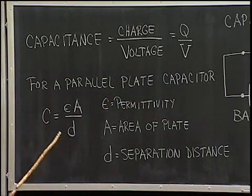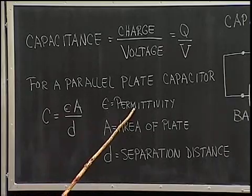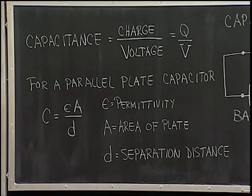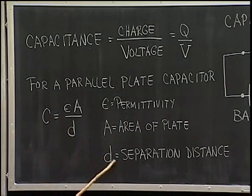So for a parallel plate capacitor, capacitance turns out to be given by this equation, where epsilon is the permittivity constant, which is related to the type of material between the plates. A is the area of either plate and D is the separation distance between the two plates.